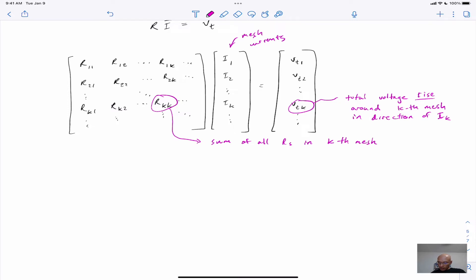And then, the off-diagonal elements will say it's RJK, which will also be equal to RKJ. And these are going to be the sum of all resistances common to loops j and k.